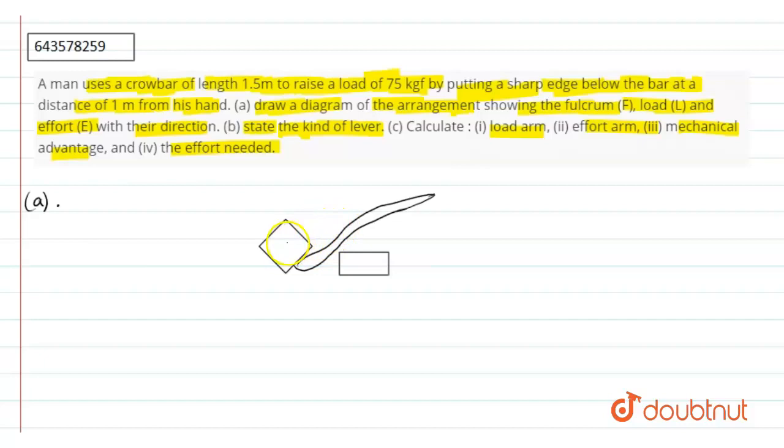Our crowbar will be like this. This stone acts as a fulcrum whereas this stone will act as a load and we apply effort in downward direction. This is the required diagram for our first part.